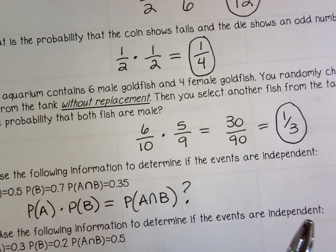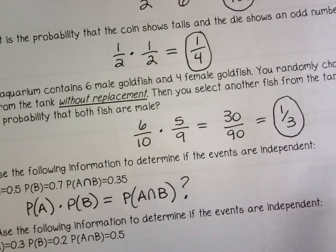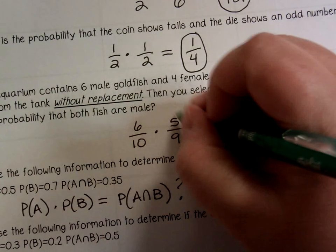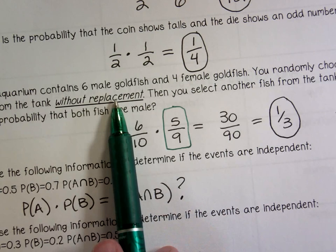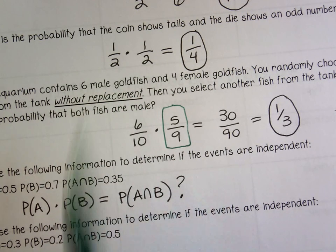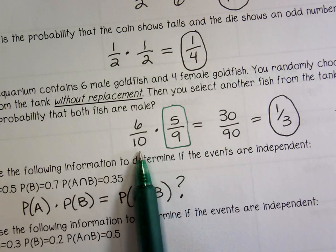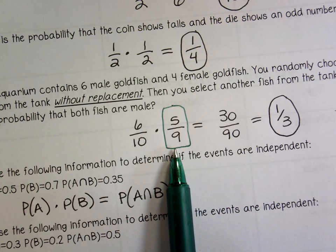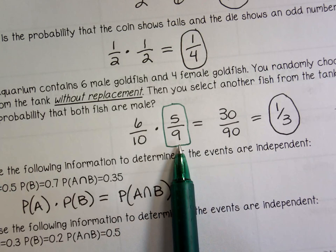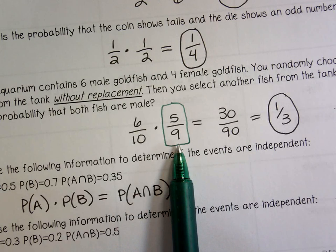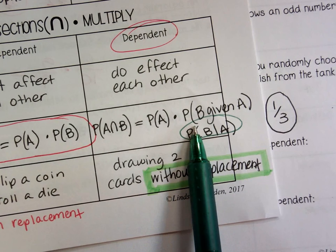We talked about number 7 being without replacement, so that means they're dependent. The probability of drawing a male goldfish out of this tank is 6 out of 10. But if I take one out and haven't replaced it, that means I've changed that probability. So then I multiply by that adjusted probability — meaning the probability of getting a male now that a male has already been taken out.